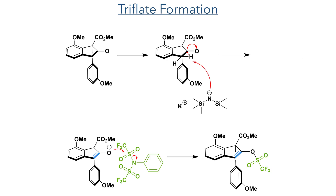The next stage of the sequence was to form a triflate enol ether. Formation of an enolate with KHMDS formed the nucleophile, which was then reacted with N-phenyl bis-trifluoromethanesulfenamide, which is an alternative to the more commonly used Comins' reagent.